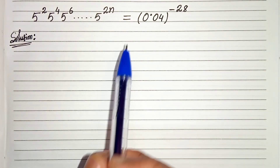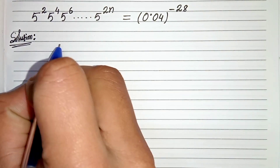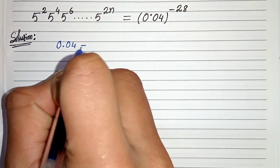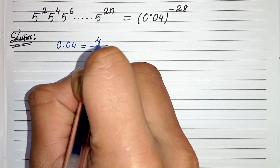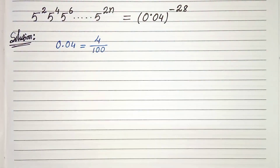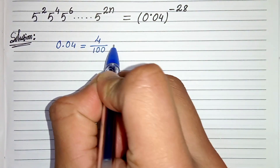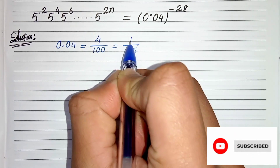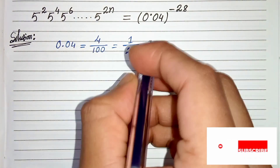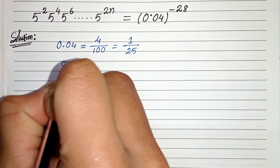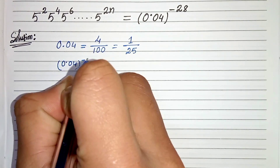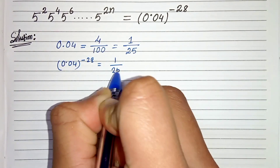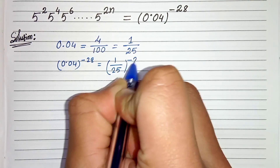First of all, we can write 0.04 as 4 divided by 100. And if we divide 100 by 4, we get 25, so 0.04 equals 1 by 25. Therefore, 0.04 whole to the power minus 28 can be written as 1 by 25 whole to the power minus 28.